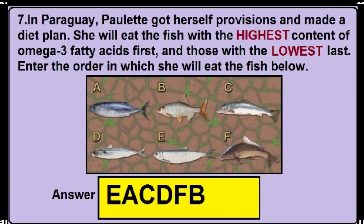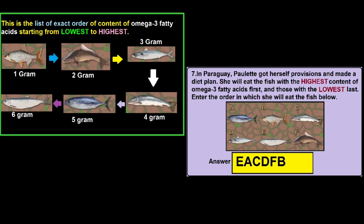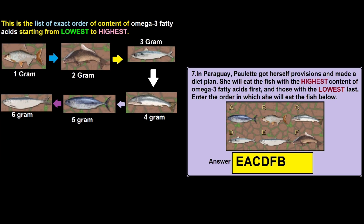The question may come like this: she will eat the fish with the highest content of omega-3 fatty acid first and those with the lowest last — so that means they are talking about highest to lowest. If they ask about highest to lowest, just see the left image and compare it with the right image. After comparing, you will find that the correct answer is EACDFB.